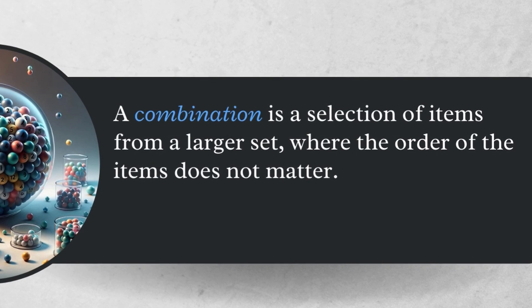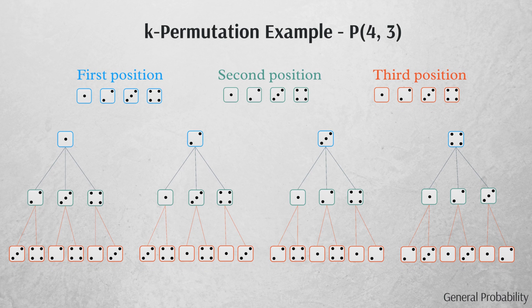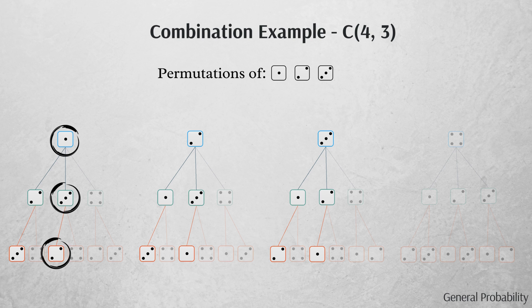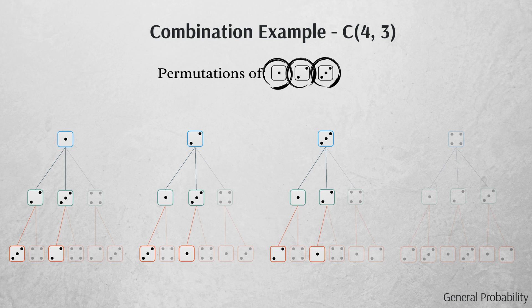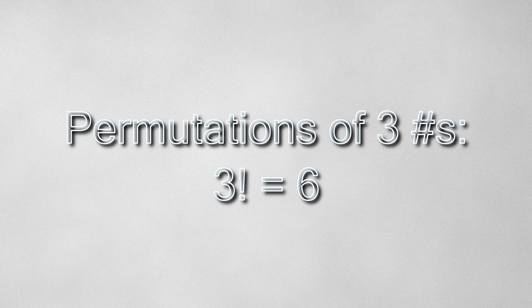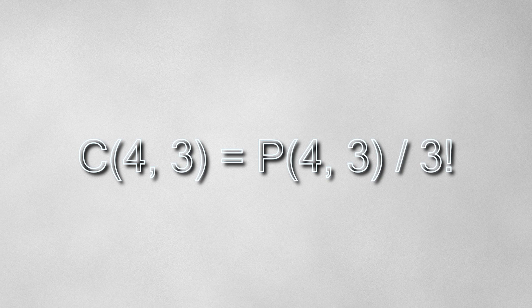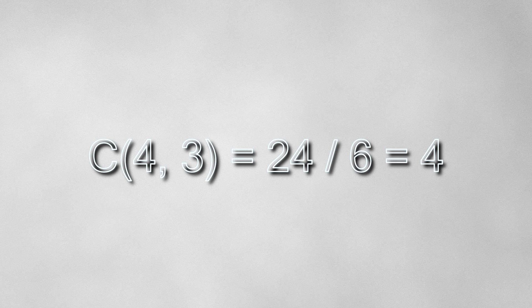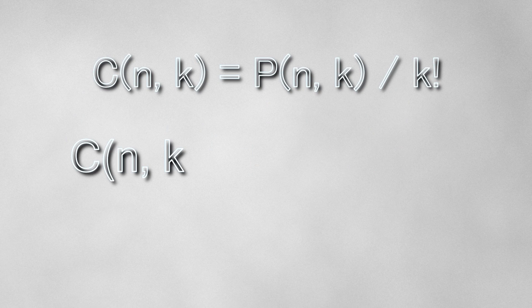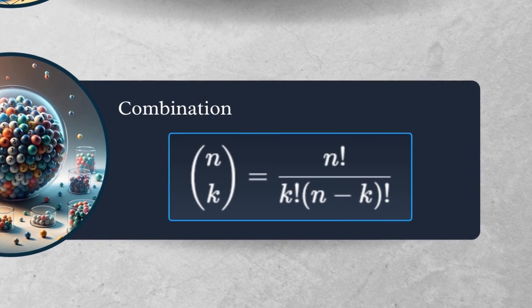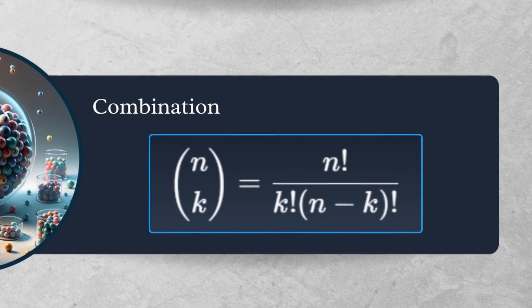In contrast to a permutation, a combination is a selection of items in which order does not matter. In the permutation case for 4 permute 3, arrangements like 1-2-3, 1-3-2, 2-1-3, 2-3-1, 3-1-2, and 3-2-1 are all different permutations because order matters. However, as a combination, these are all the same because they all contain the elements 1, 2, 3 in no particular order. We can draw the same conclusions for the combinations 1-2-4, 2-3-4, and 1-3-4. In each case, there are six permutations for each combination, which makes sense because there are 3 factorial, or 6, ways to permute 3 numbers. We know that 4 permute 3 is 24, and there are six permutations for each combination, so 4 choose 3 equals 4 permute 3 divided by 3 factorial, which is 24 divided by 6, which equals 4. To generalize, n choose k equals n permute k divided by k factorial. The most common way to write n choose k is with the binomial coefficient, which will make a return in part 2.